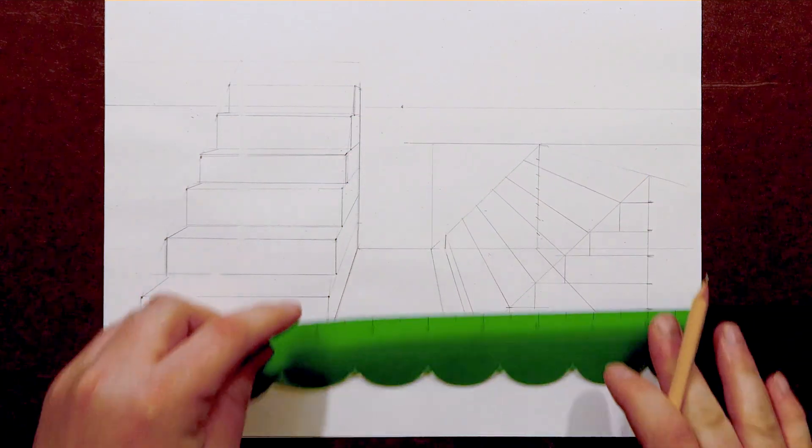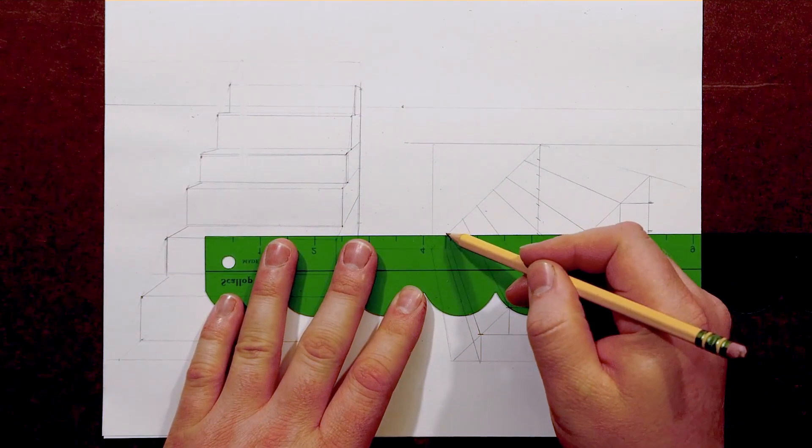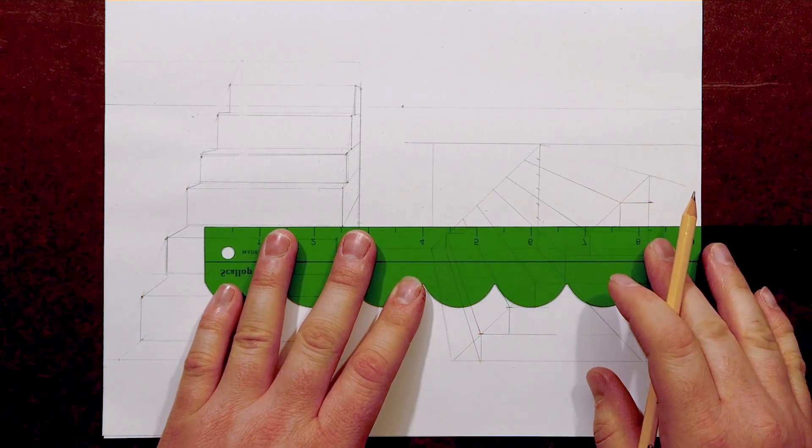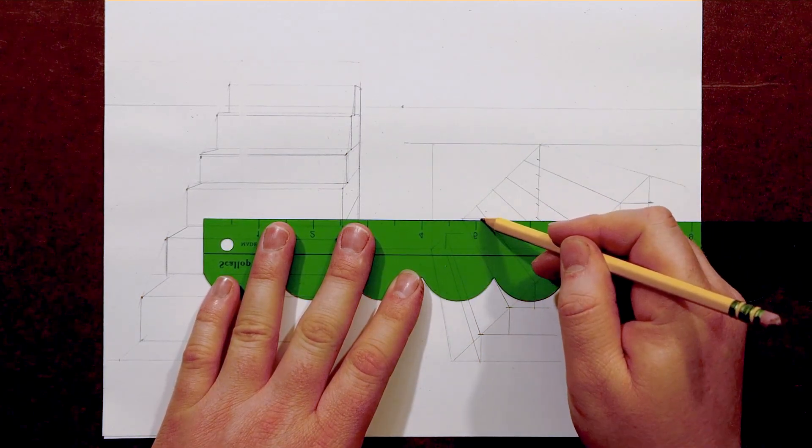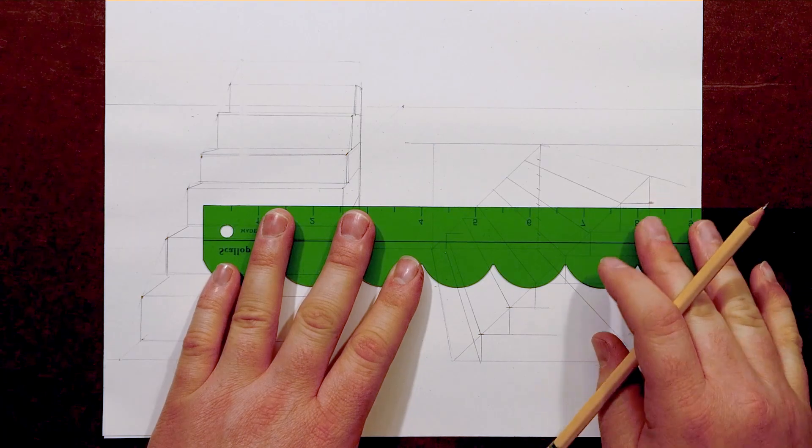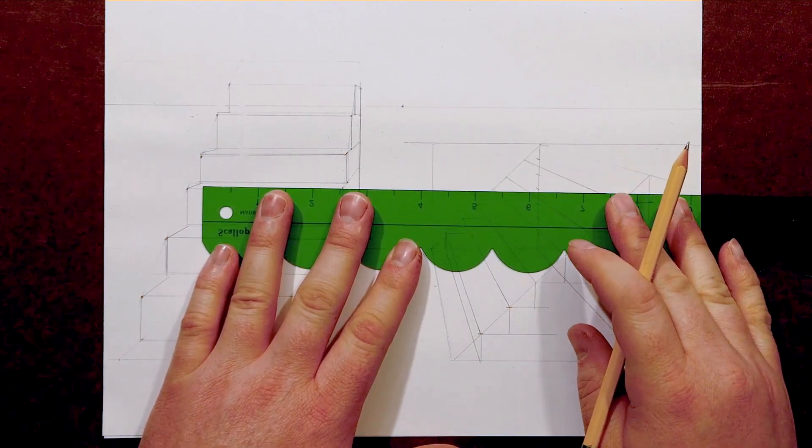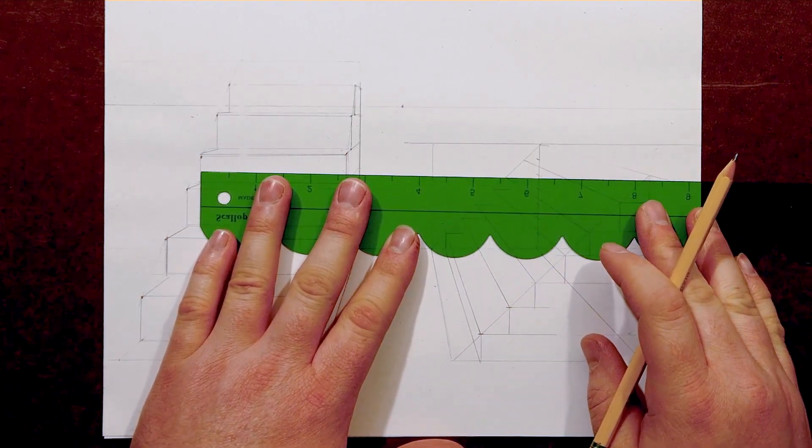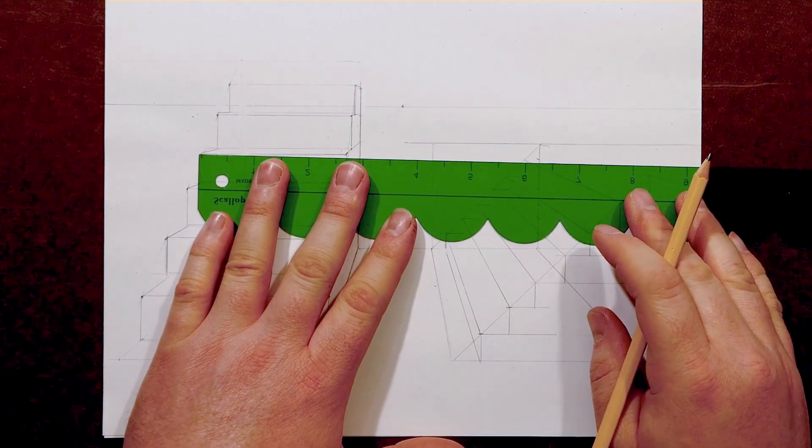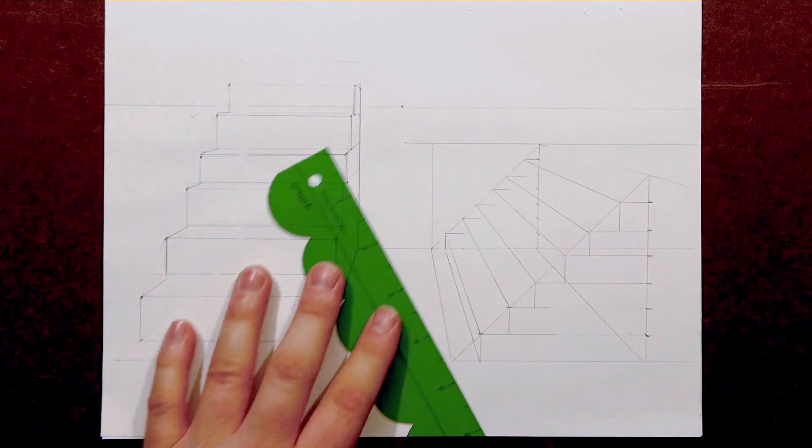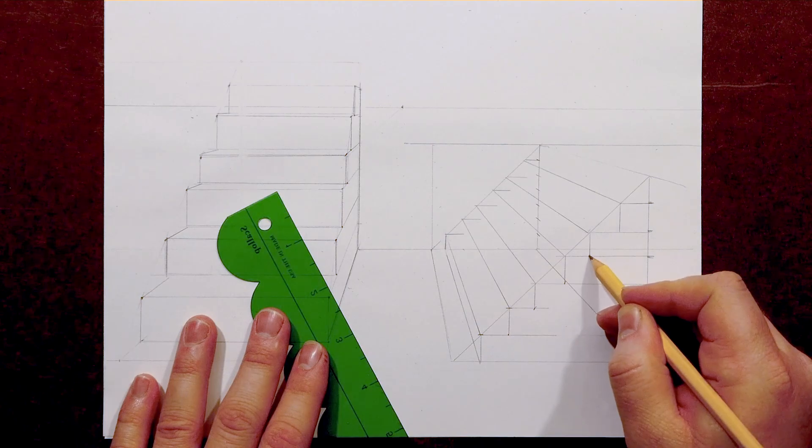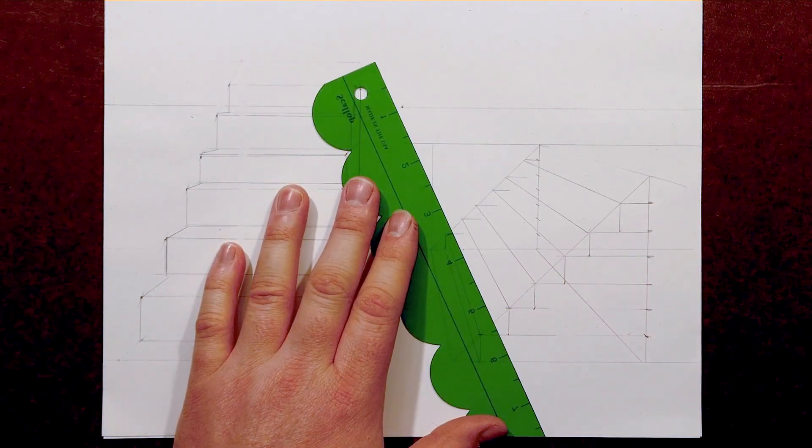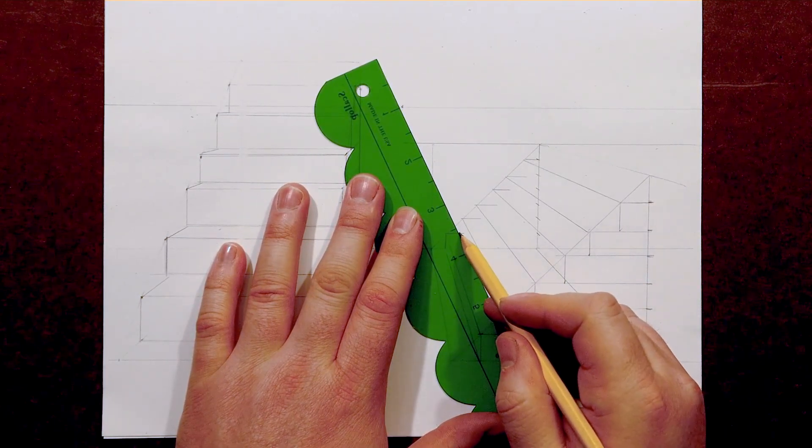With these drawn in, I can now use horizontal lines to intersect with the different parts of the stairs to make sure that I have those spot on. Just like in the other stairs, we want to make sure to be careful to keep horizontal lines perfectly horizontal, vertical lines vertical, and converging lines always hitting that vanishing point.